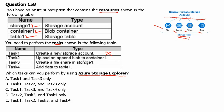Task 2, uploading an append blob to container1, can be performed because we can manage data in a storage account. Task 3, creating a file share in storage1, can also be performed because that is an activity with an object inside the storage account. Task 4, adding data to table1, can also be performed using Azure Storage Explorer. Therefore, option D is the correct answer — Task 2, Task 3, and Task 4 can be performed using Azure Storage Explorer.